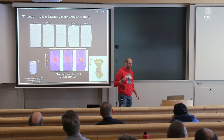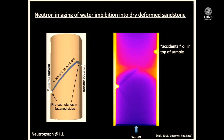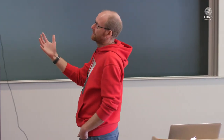One key application of neutrons is detecting hydrogen in materials, making neutrons ideal for following fluid flow in rocks. A deformed rock sample was radiographically imaged as water was flowed through, revealing the fluid front preferring certain paths — particularly through a deformation region. This work from 2013 allowed quantification of flow velocities and understanding of how deformation affected flow.